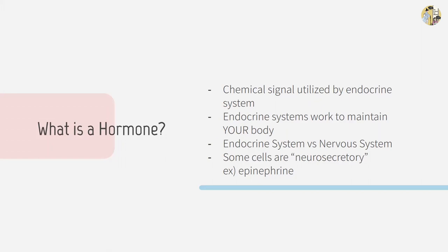It is helpful to compare and contrast the endocrine system and the nervous system. In terms of speed, the nervous system is much quicker than the endocrine system, because the signal is transmitted via electrical signal instead of a hormone that travels through the bloodstream. However, the effects of hormones last longer than those of the nervous system.